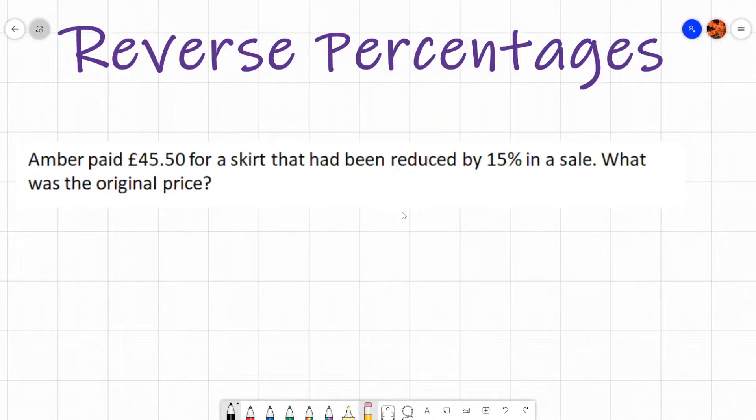If you've got a skirt that has been reduced by 15%, we need to identify what percentage the skirt is worth. So the original value of your skirt would be 100%. 100% for the original value of your skirt.